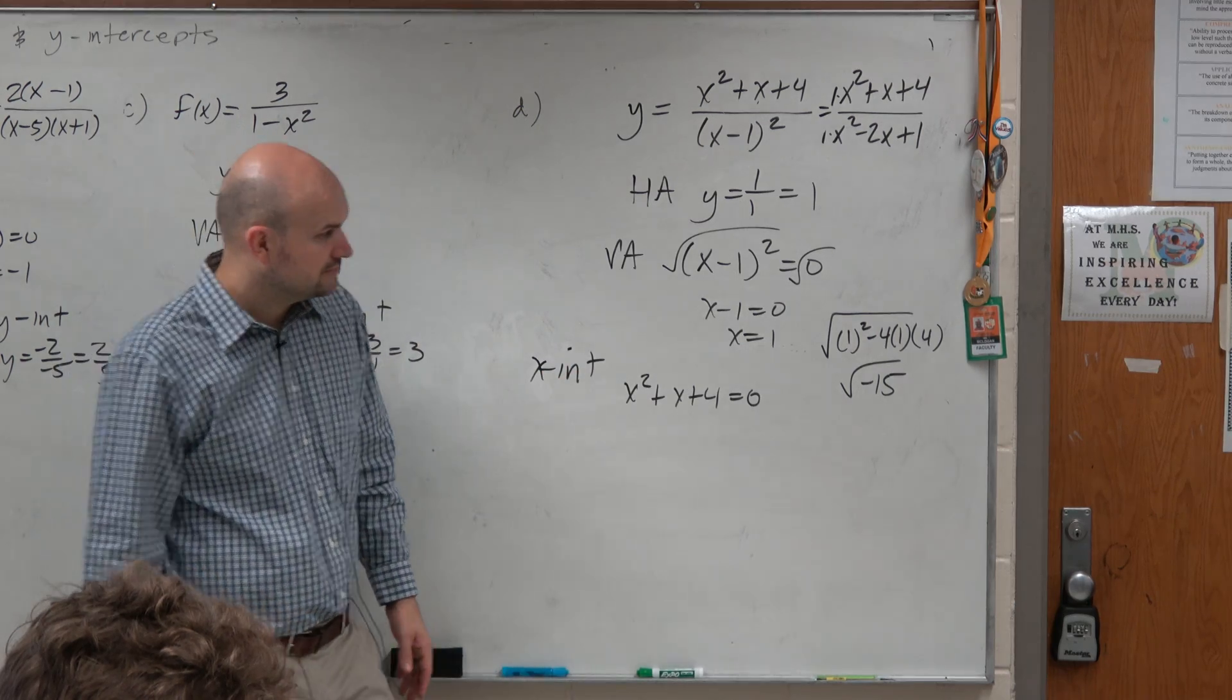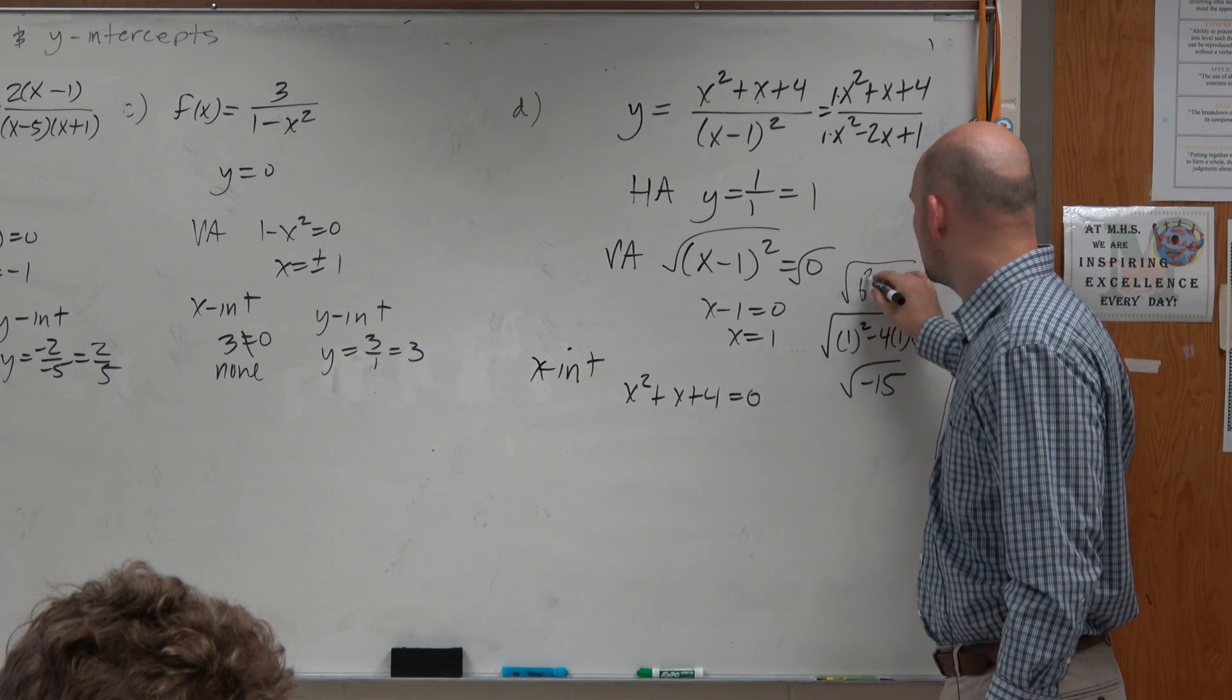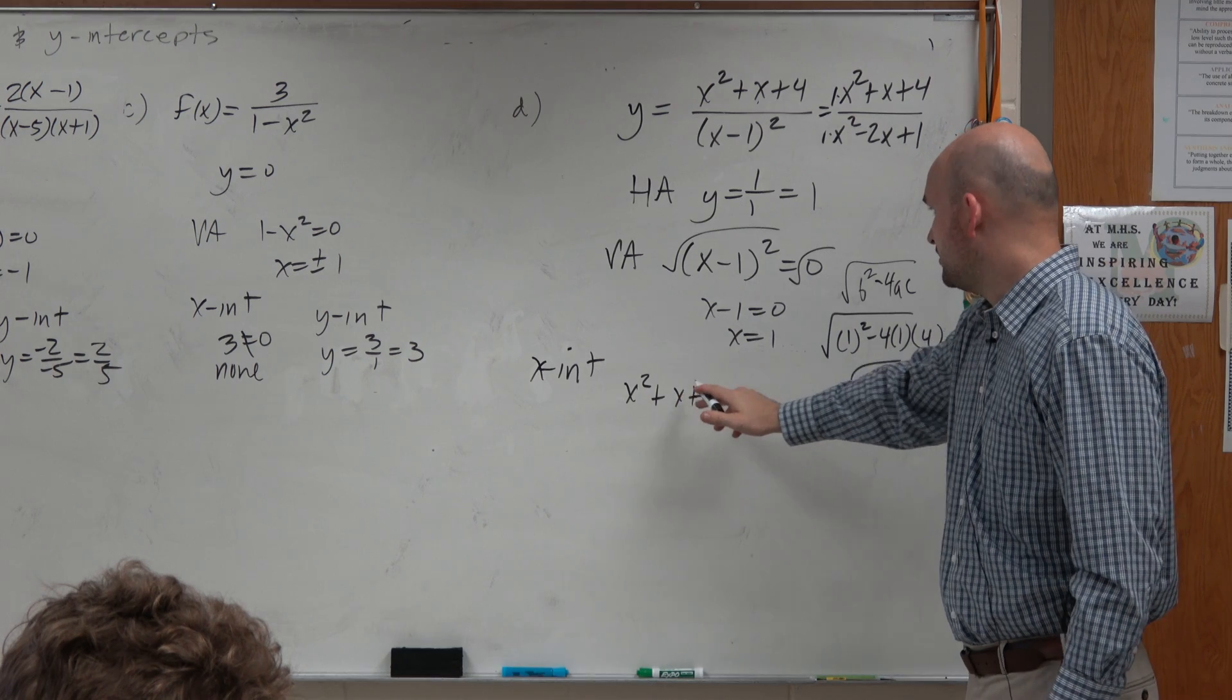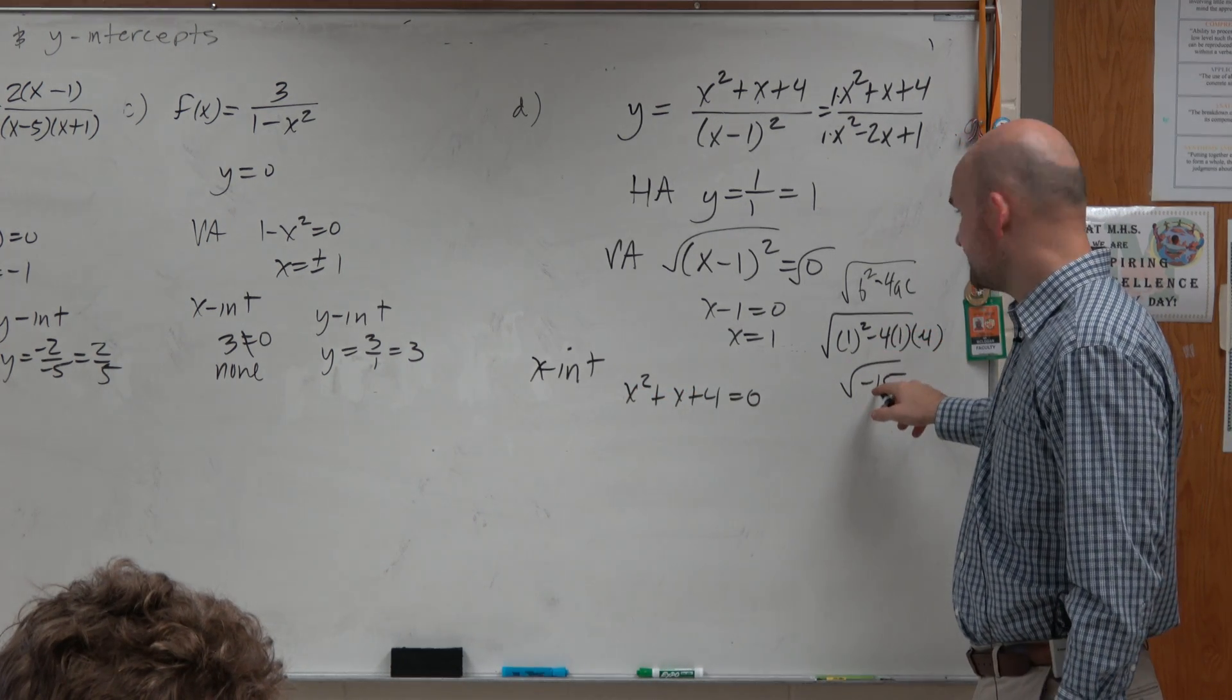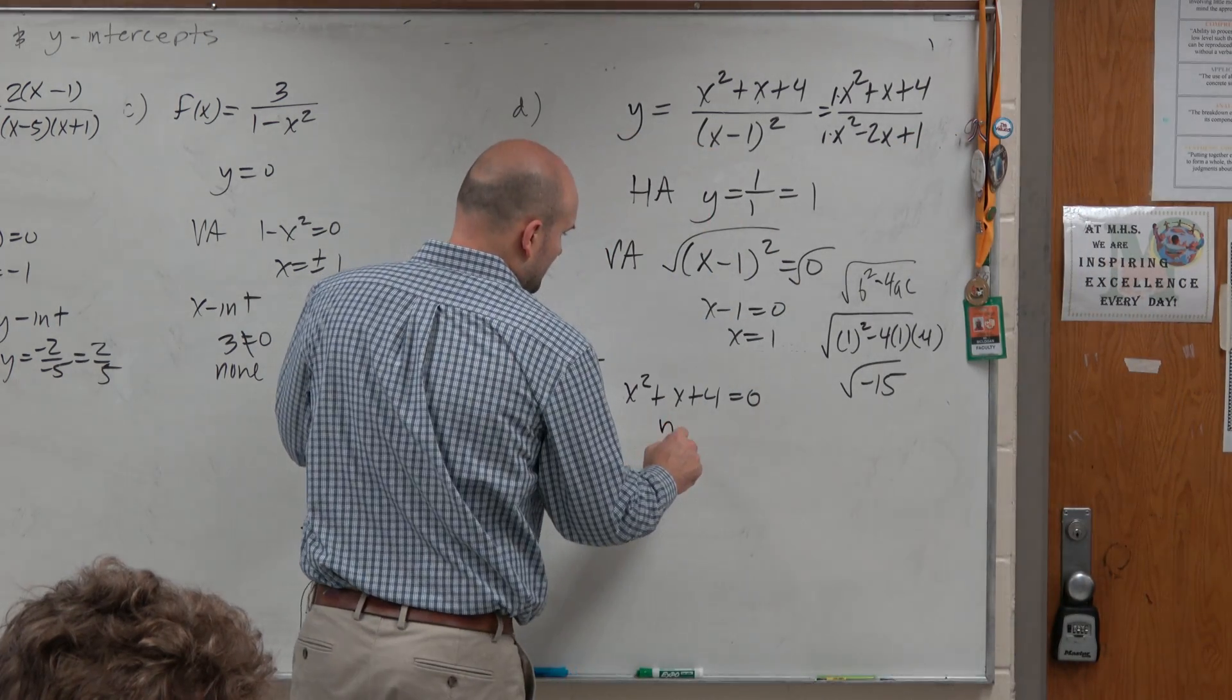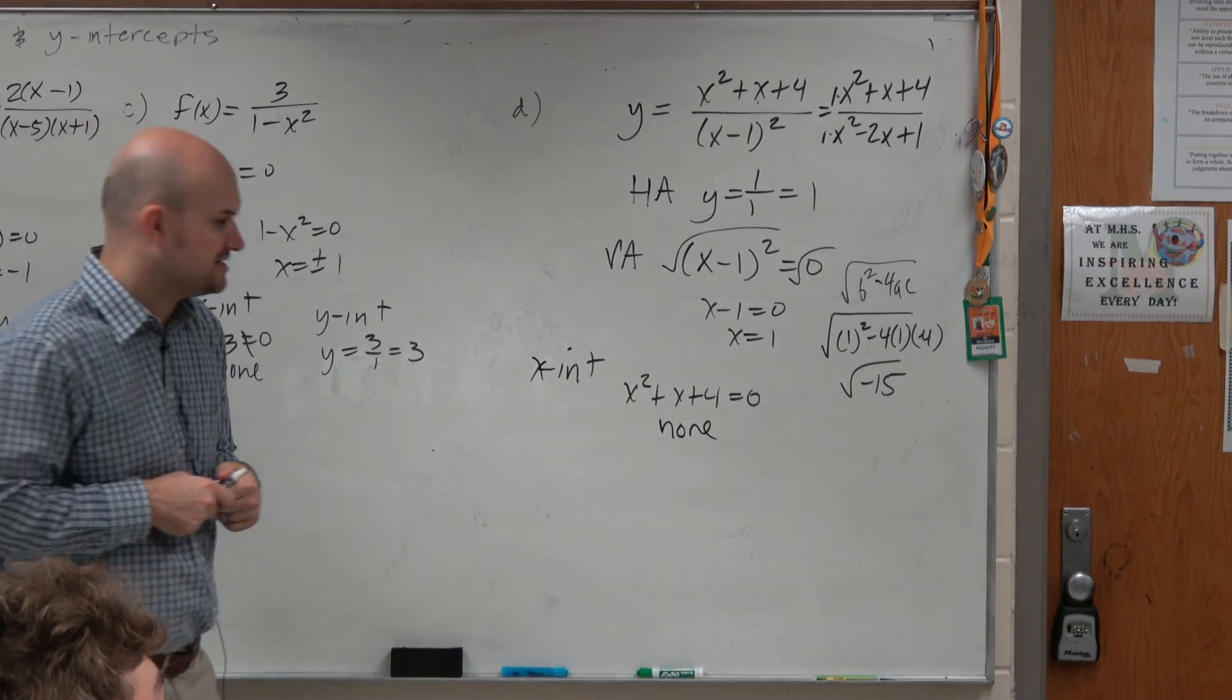So what did you do for the discriminant? I just plugged in the discriminant. b² - 4 times a times c. 1² - 4 times 1 times 4, which gives me negative 15. So therefore, with doing as minimal work as I can, I can understand that there's no x-intercepts.